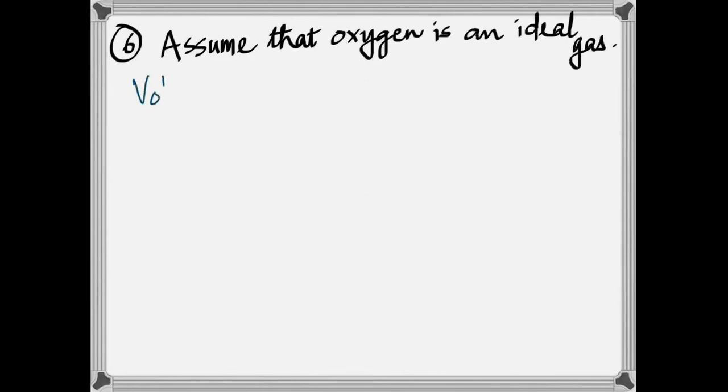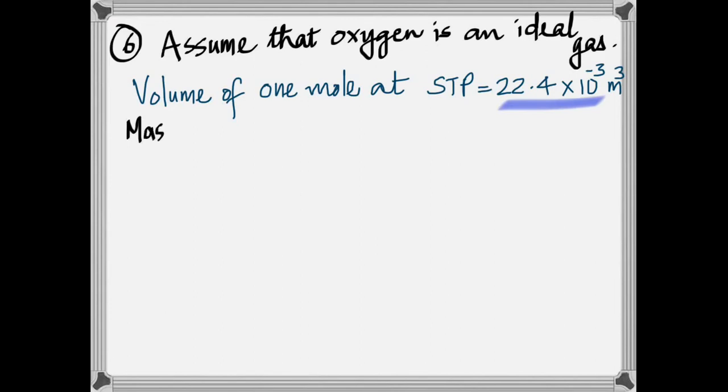Now, to do these problems, we have to consider that the gases are ideal gases, and volume of 1 mole at STP, 1 mole of any gas at STP occupies 22.4 liters, which is 22.4 times 10 to the negative 3 meter cubed, and you need to know that information.